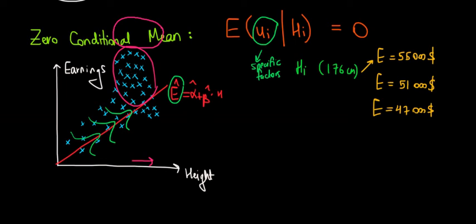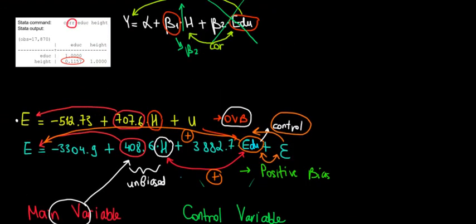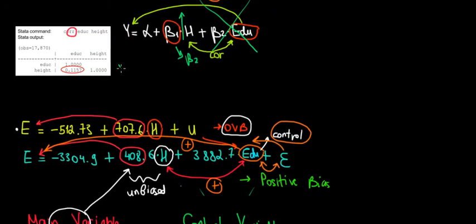Well it's the case because of the omitted variable. Remember that height is correlated with education. That was the case, right? This table over here. The height is correlated with education.